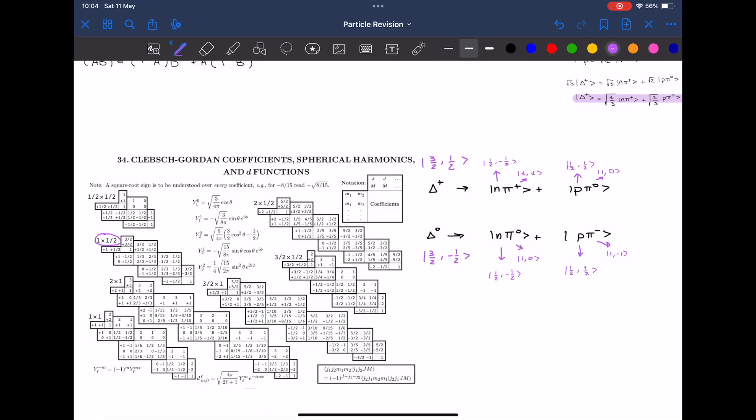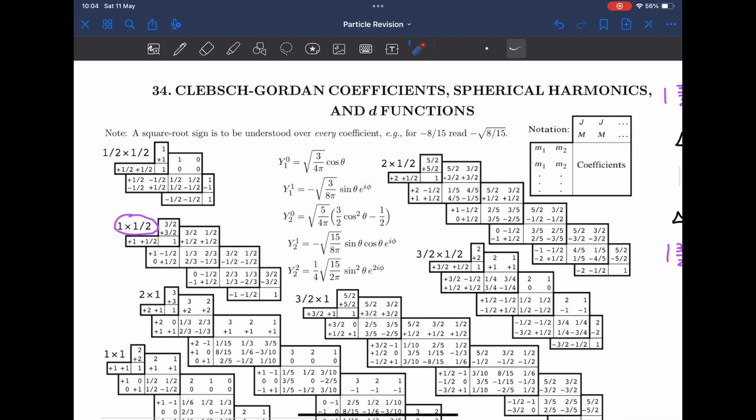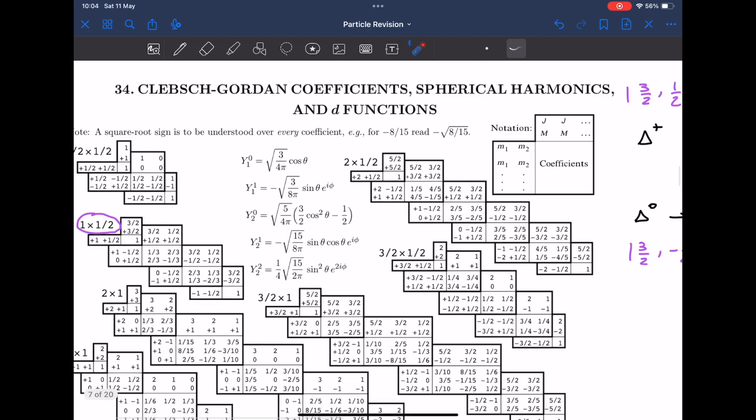Next step we need to look at the isospin and isospin projection of the decaying particles. In this case delta plus, the isospin and isospin projection is 3 over 2 and 1 over 2. So we go and look at all these columns and the correct one will be 3 over 2 and a half which is this column right here. So we write down delta plus.